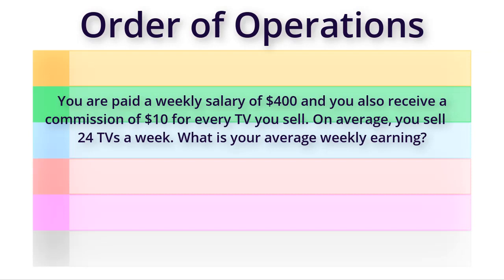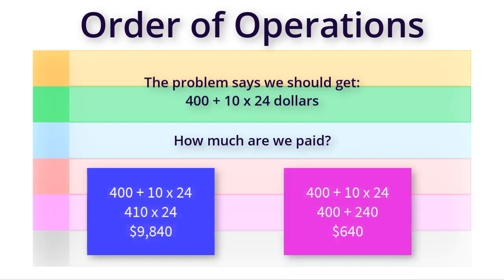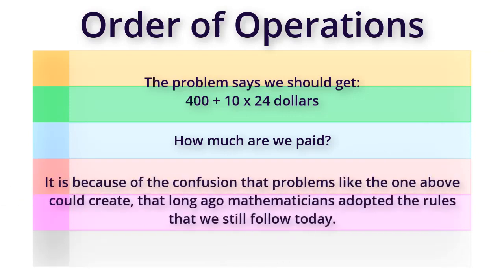The problem says we should get four hundred plus ten times twenty-four dollars. How much are we paid? Is it the one on the left or the one on the right? It's the one on the right. Common sense tells us that we will receive six hundred and forty dollars instead of nine thousand eight hundred and forty dollars, because we have a real-life situation to relate to this. What if we did not? How would we evaluate four hundred plus ten times twenty-four without knowing what the numbers refer to or what the situation is? It is because of the confusion that problems like the one above could create that long ago mathematicians adopted the rules that we still follow today.